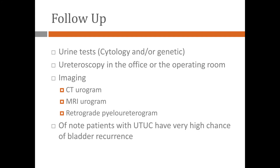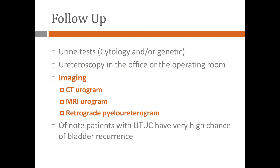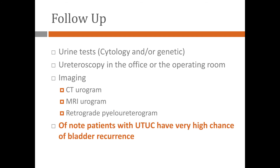After the first treatment, we have to follow up to make sure that the cancer doesn't come back. For that, we use urine cytology, genetic testing of the urine, and then we do ureteroscopy to look again in the kidney and the ureter. That can be done mostly in the operating room under general anesthesia, and sometimes in the office. We also utilize imaging studies — CT urograms, MRIs, and retrograde pyeloureterograms — to rule out recurrence.